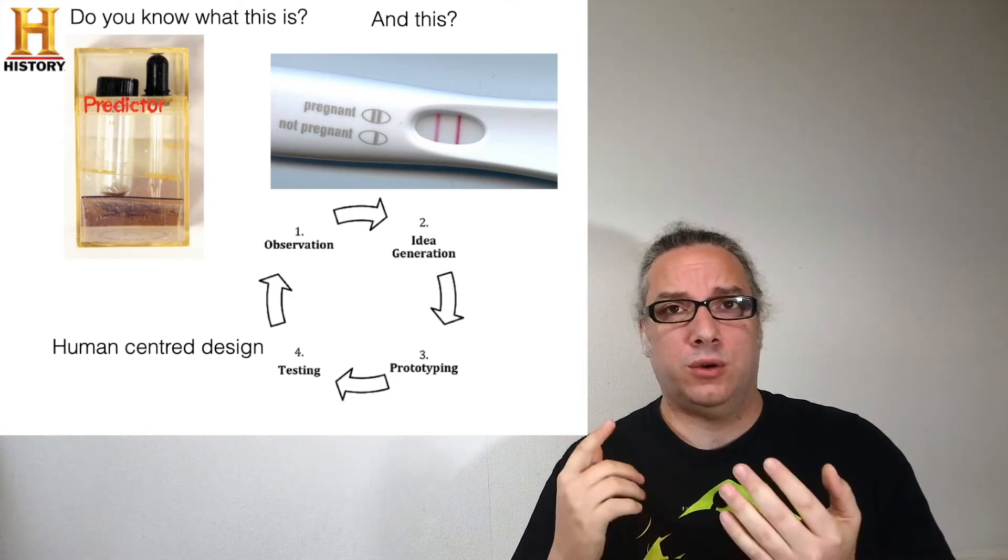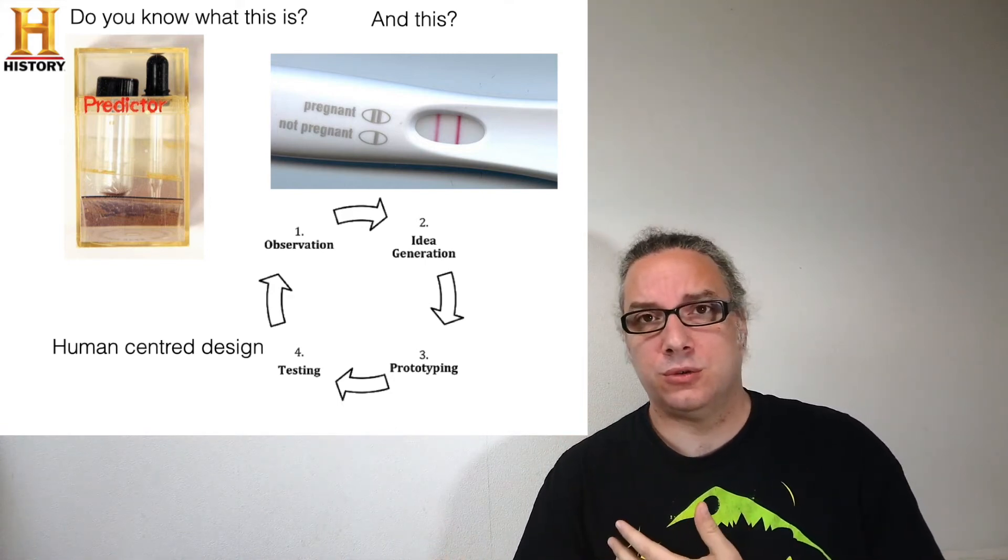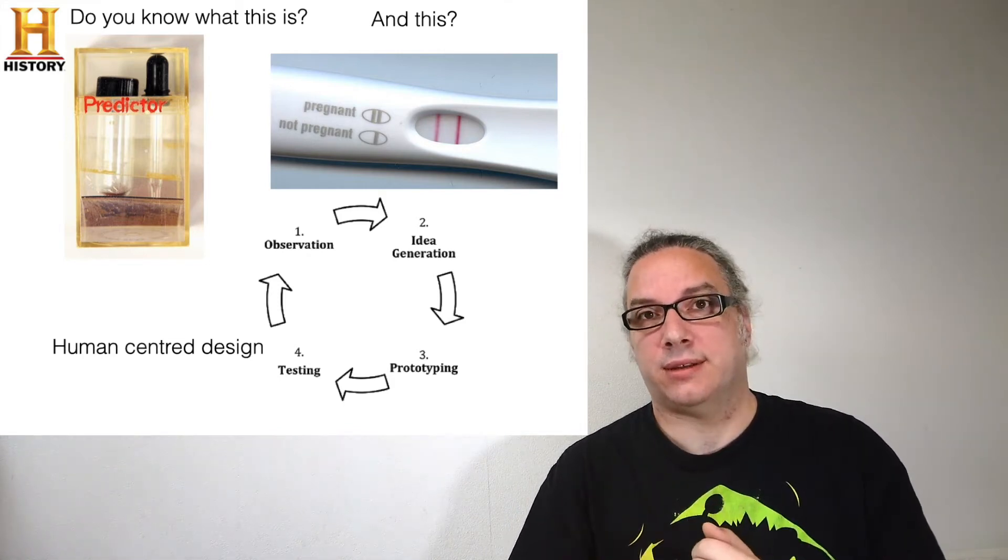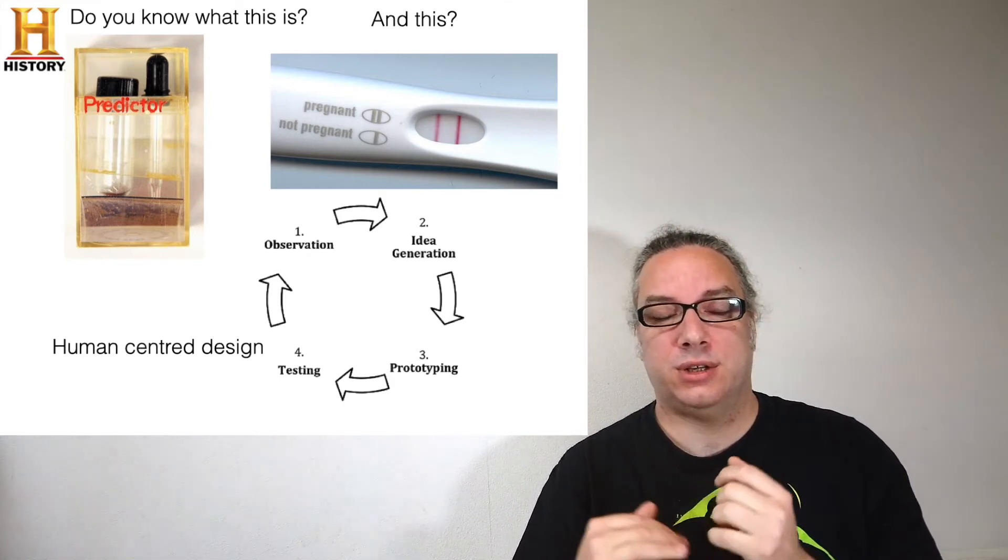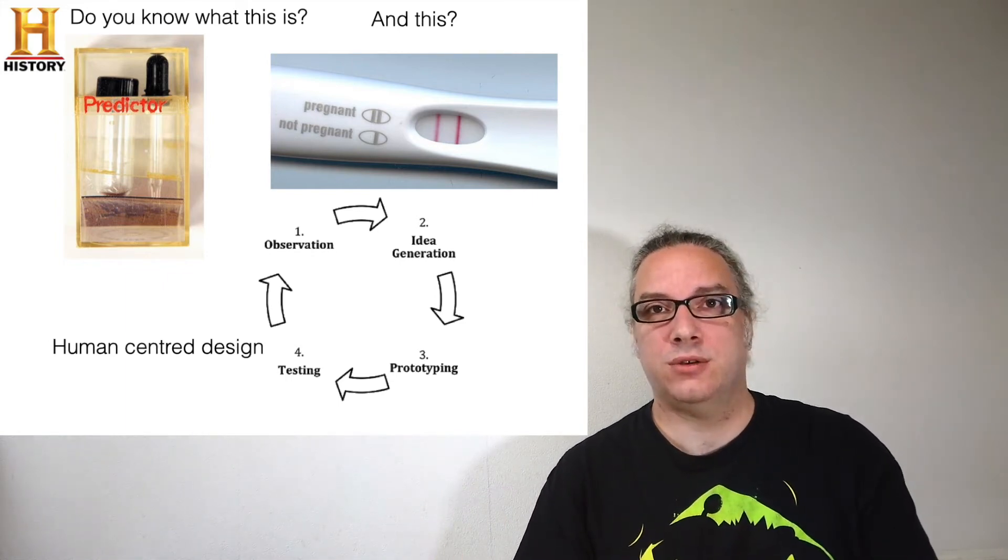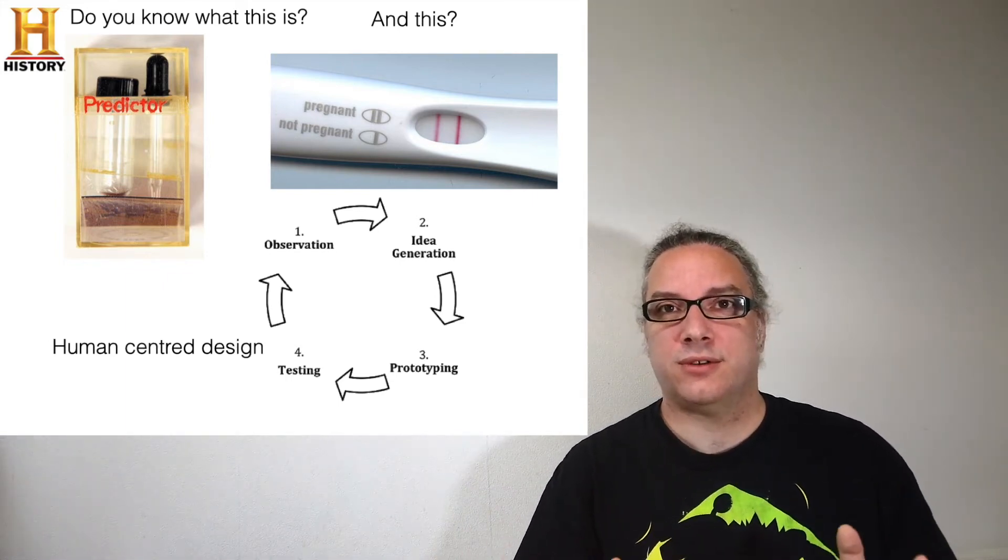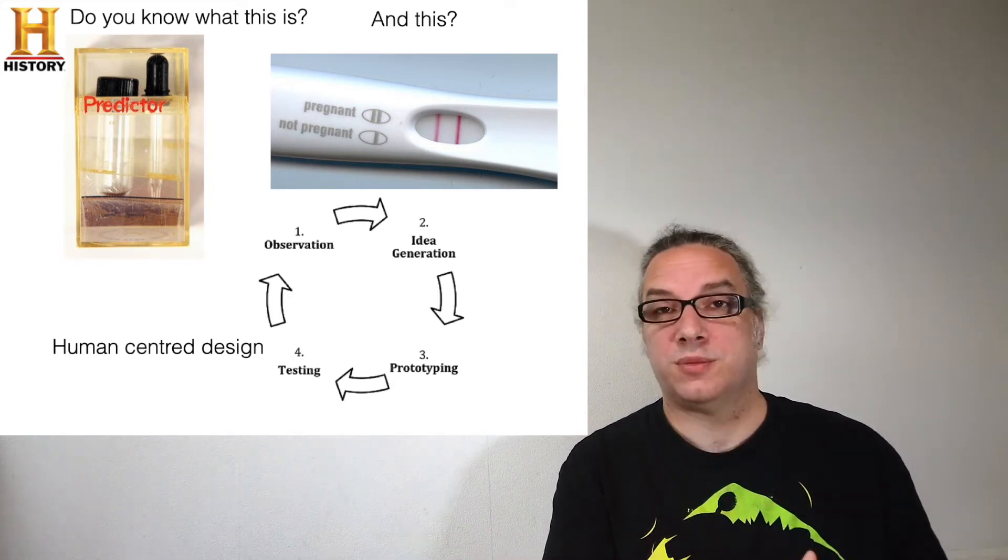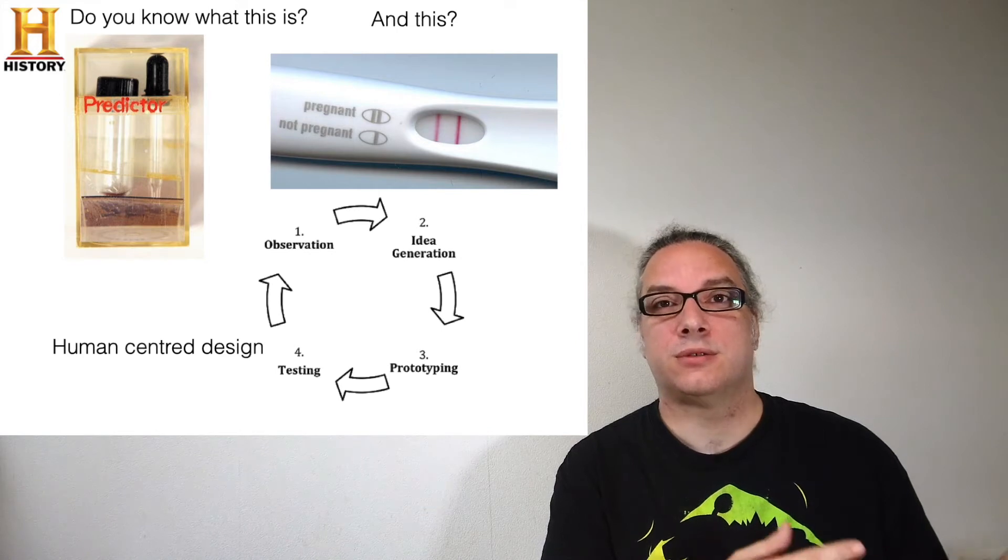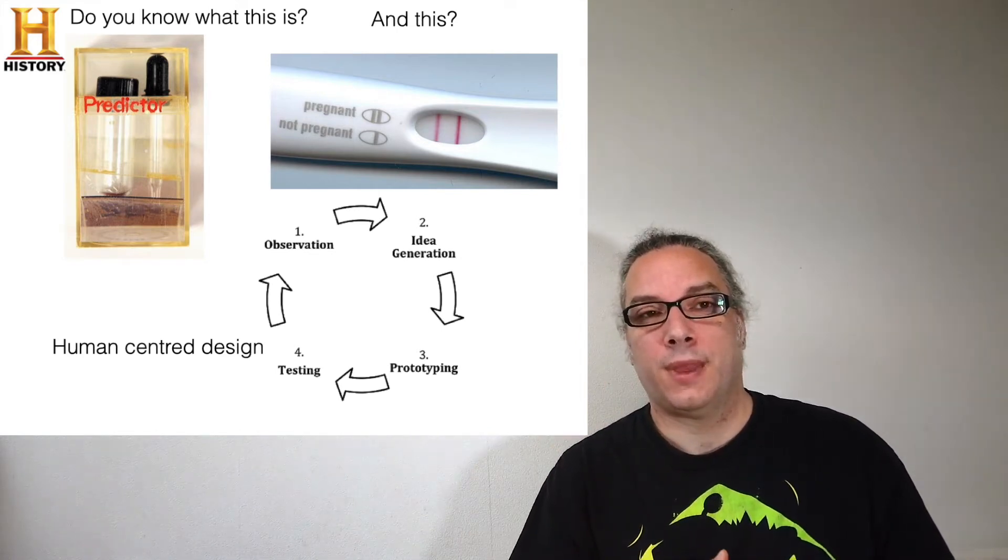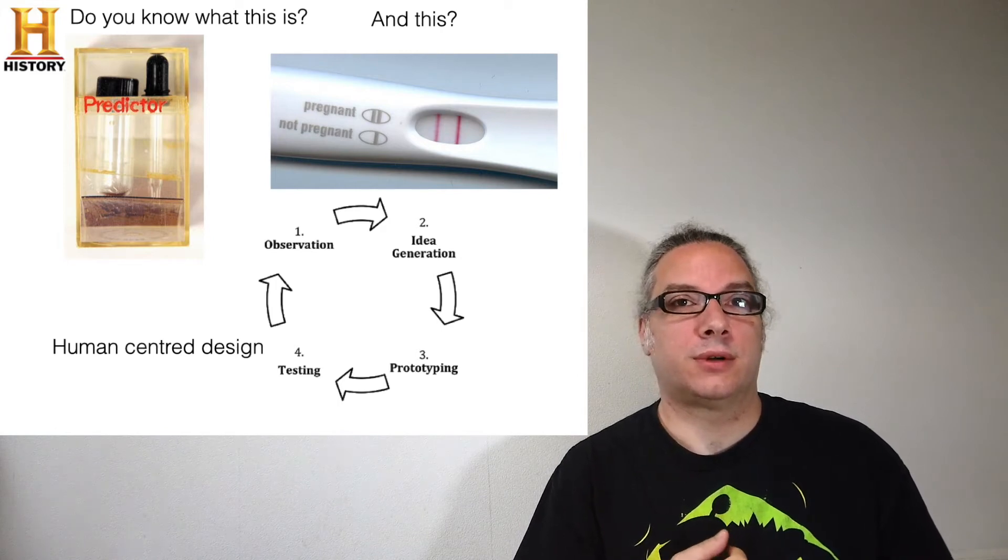You start to make an observation. You get an idea on how your sensor should work. Then you make a prototype, and then you start testing it. The test is actually the human-centered design. If it works, if people can use it, then it's a good sensor. If people don't know how to use it or it's too difficult to use, then you make your observation again—it's difficult because of this, this, and this—and then you start the circle again. This is very important for sensor development.